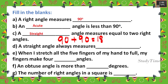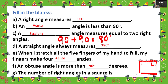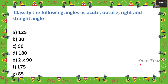So 180 degrees is a straight angle — a straight angle always measures 180 degrees. When you stretch all five fingers of your hand fully, your fingers make only acute angles, which are less than 90 degrees. An obtuse angle is more than 90 degrees. The number of right angles in a square is four.